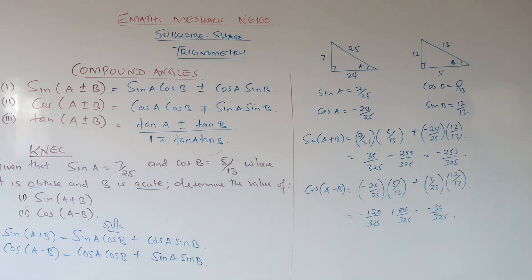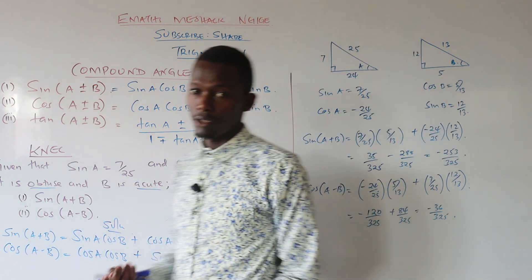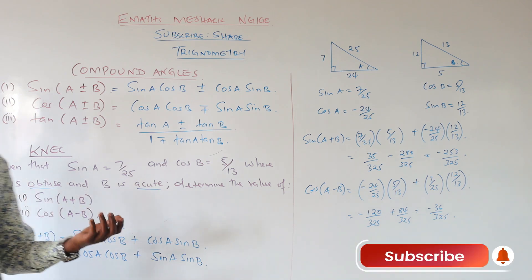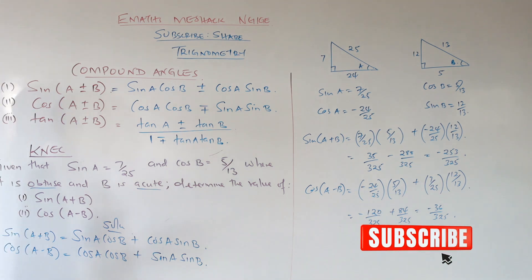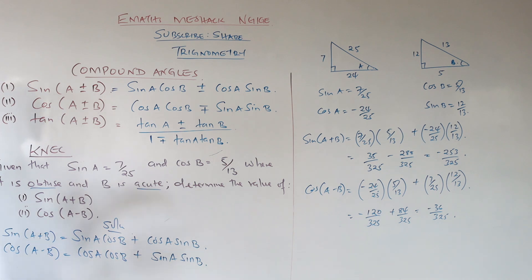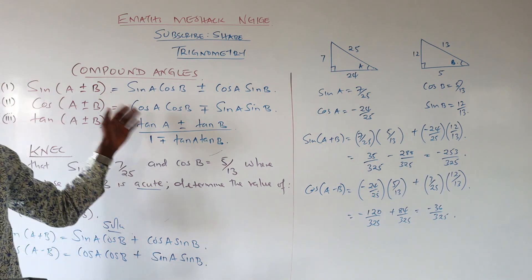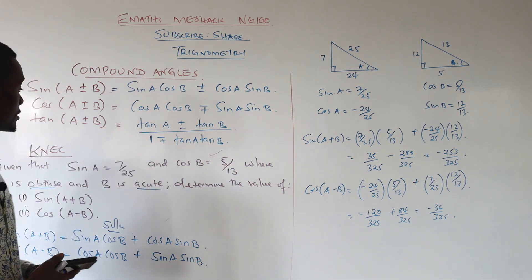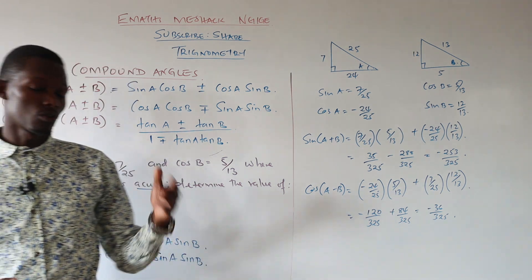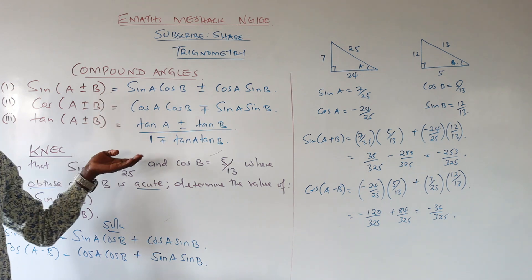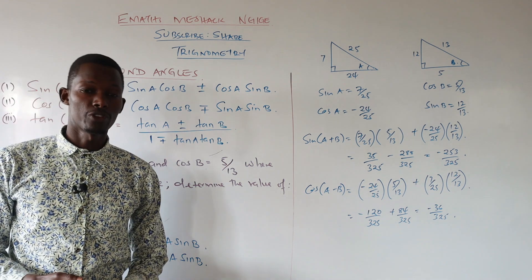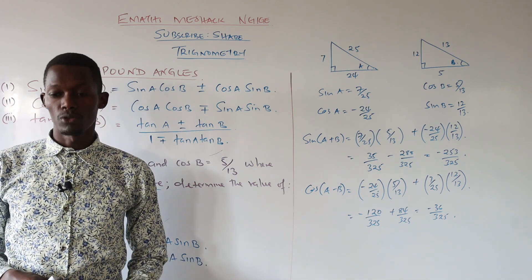Those are the two solutions. To summarize: when all angles are acute, working is direct. When one is obtuse, be vigilant about which quadrant the angle belongs to — first, second, third, or fourth — since the sign of each ratio depends on that. This is just an application of compound angles. We'll check more NEC questions in the next lesson. Kindly subscribe, share, and comment.